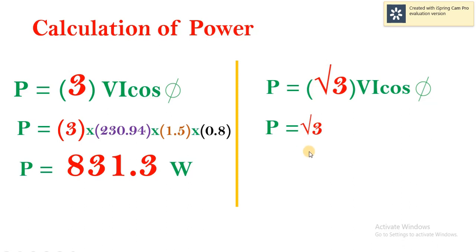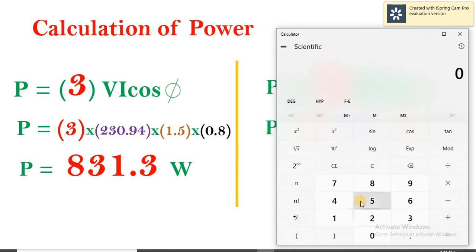Therefore, multiplying root 3 times line voltage. For the sake of calculation, line voltage was taken as 400. Root 3 multiplied by 400 multiplied by 1.5 and multiplied by cos phi 0.8. Now, calculating: 1.732 into 400 into 1.5 into 0.8. The answer comes out to be 831.3 watts.